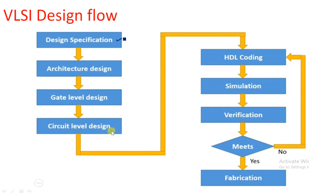The first step is design specification. Design specification, according to the market requirements, is going to be considered. For example, previously only feature mobiles were used, with only a calling function. Later SMS was implemented, then MMS, then video games, and step by step the phone turned into a very smart phone, now useful for all applications. So based on the requirement of the market, the design specification is considered — what is the current requirement of the market.